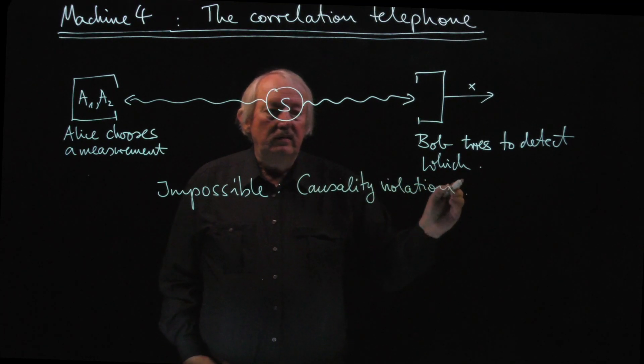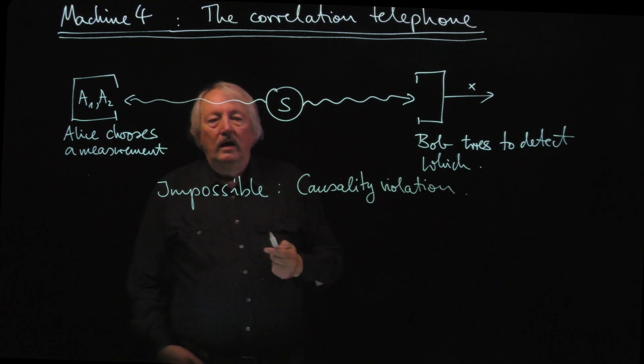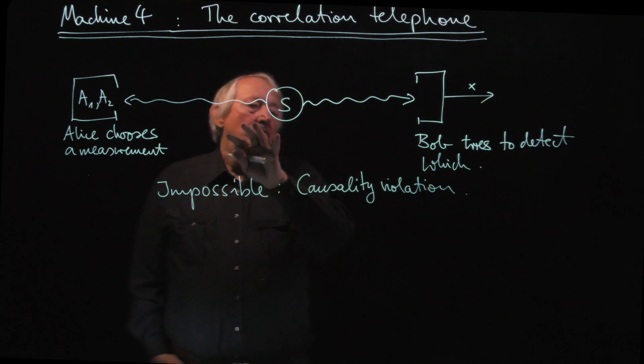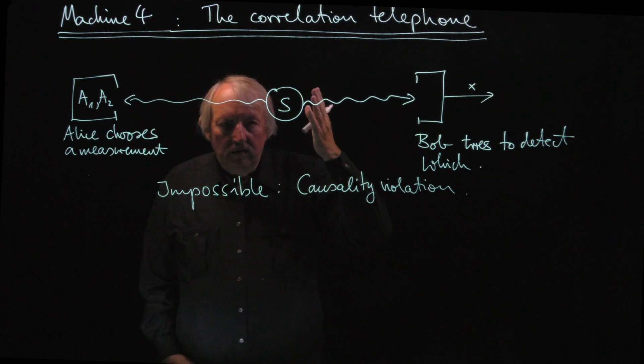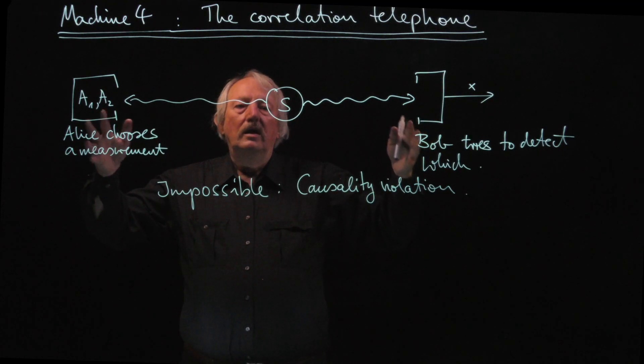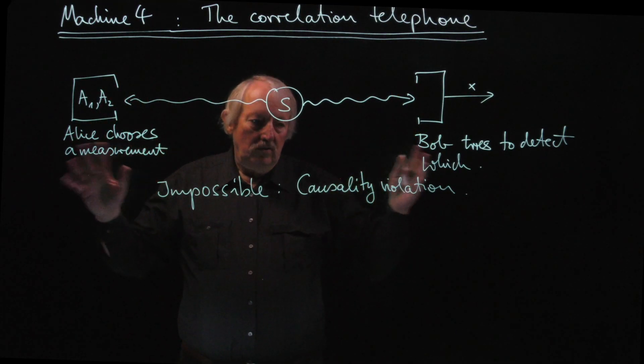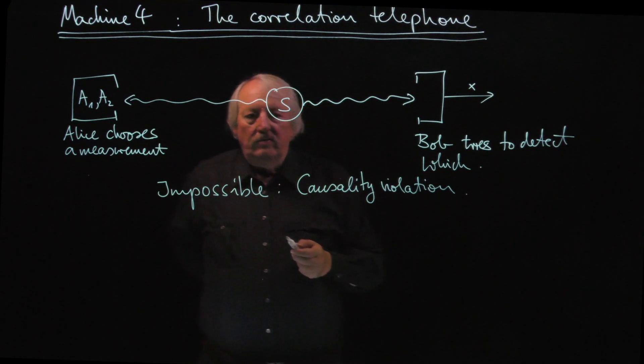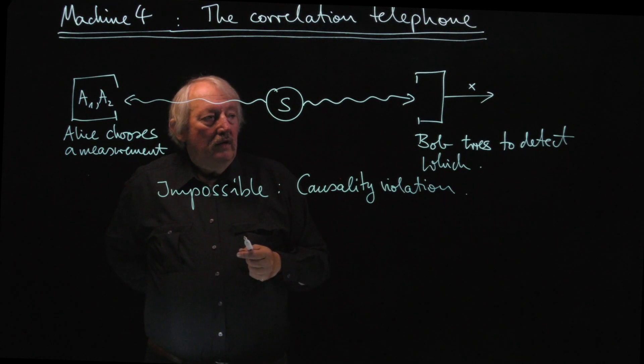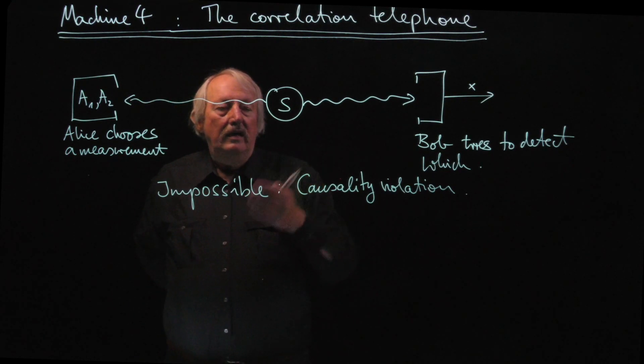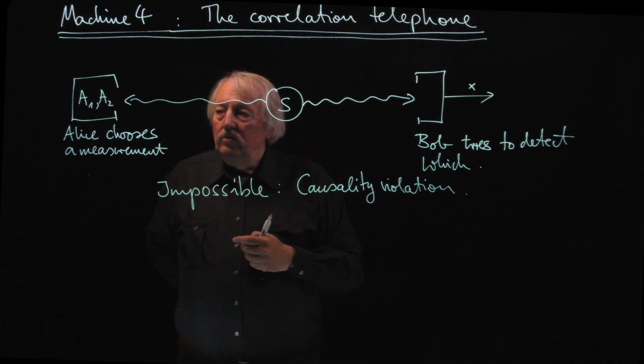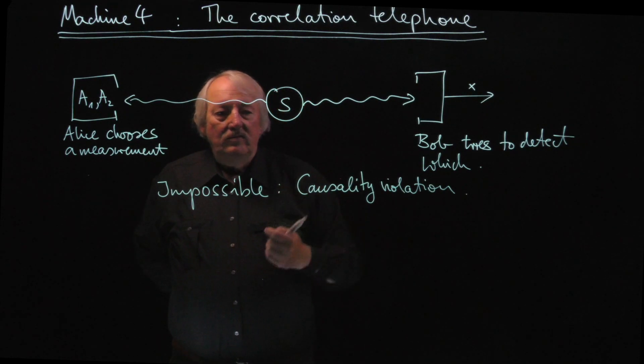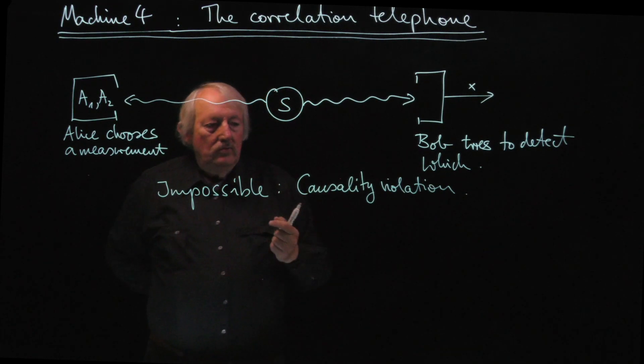You might not believe in causality and then I can't help you. But let's just assume this kind of causality holds. And then this machine taking, making, getting communication on the basis of any kind of correlation, be quantum or classical, is impossible because it violates causality. So now if we assume that as impossible, how do we actually show that joint measurements are not always possible? Because that's sort of the end of this whole reduction chain.